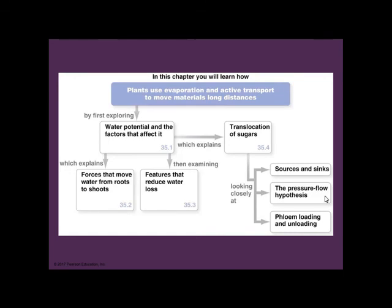In this chapter we've learned how plants use evaporation and active transport to move materials long distances. By examining water potential and the factors that affect it, we can explain the forces that move water from roots to shoots and features that reduce water loss. We also covered the translocation of sugars through the pressure flow hypothesis and phloem loading and unloading from sources and sinks.